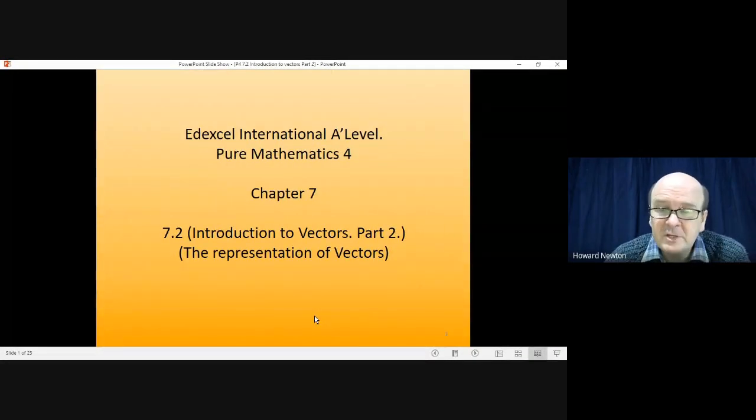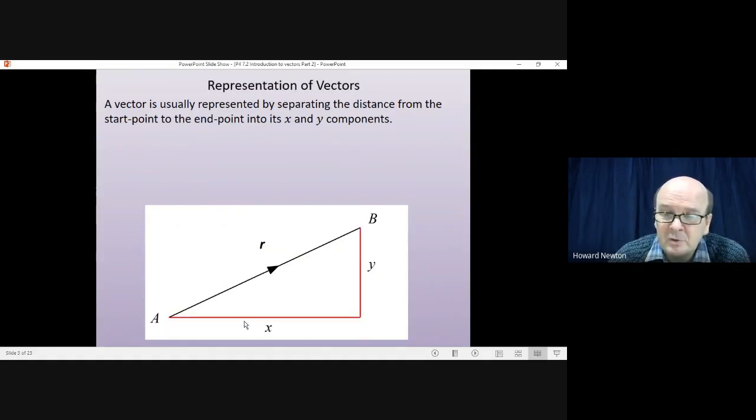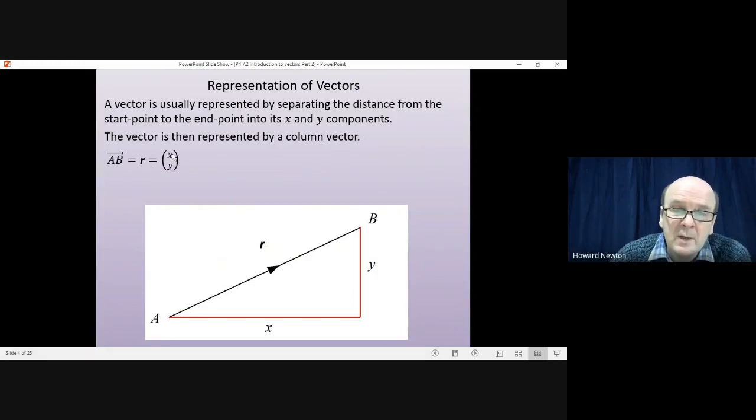In this lesson we're looking at how vectors are represented numerically. A vector is usually represented by separating the distance from the start point to the end point into its x and y components. So how far have you gone in the x direction, how far have you gone in the y direction? And then the vector is represented by a column vector. So the vector from a to b, we could write it as r, or we can write it as a column vector where x is the distance travelled in the x direction and y is the distance travelled in the y direction.